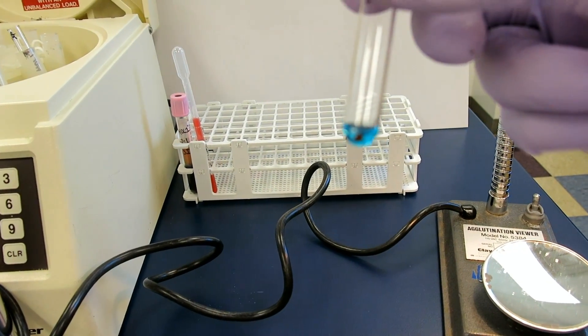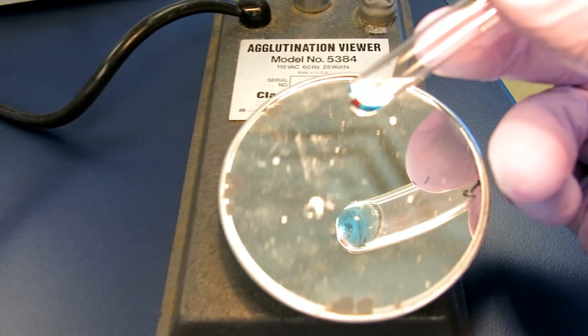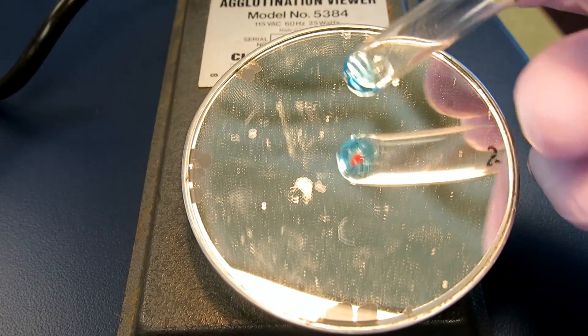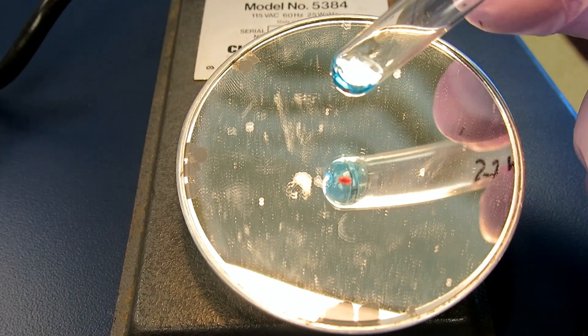All the tubes will have a visible cell button after centrifuging. Only look at the magnified image in the mirror.